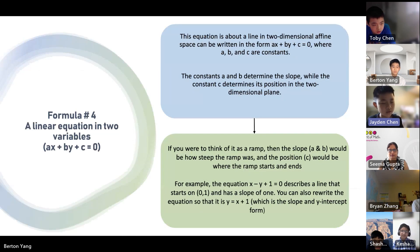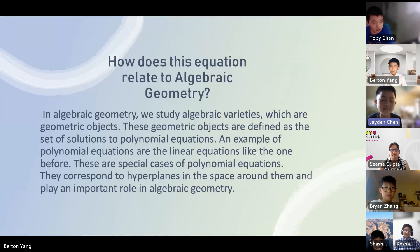Formula number four. A linear equation in two variables. This equation is about a line in two-dimensional affine space and it can be written in the form of ax plus by plus c equals 0, where a, b, and c are constants. The constants a and b determine the slope, while the constant c determines its position in a two-dimensional plane. If you were to think of it as a ramp, then the slope a and b would be how steep the ramp was and the position, which is c, would be where the ramp starts and ends. For example, the equation x minus y plus 1 equals 0 describes a line that starts on and has a slope of 1. You can also rewrite the equation so that it is y equals x plus 1, which is a slope and y-intercept form.